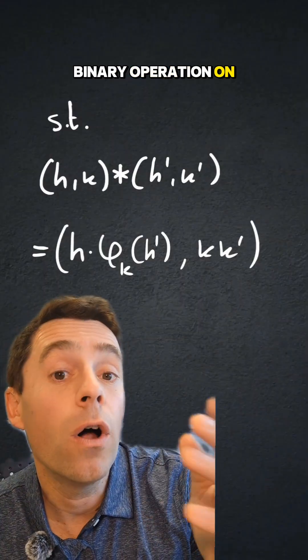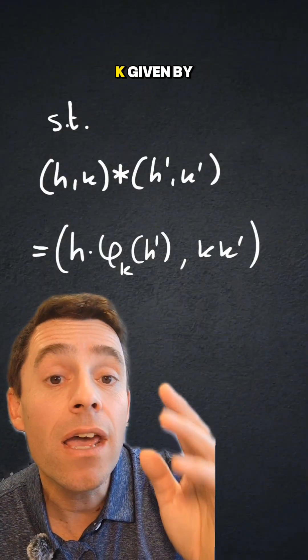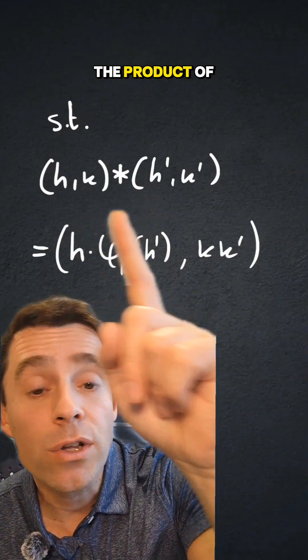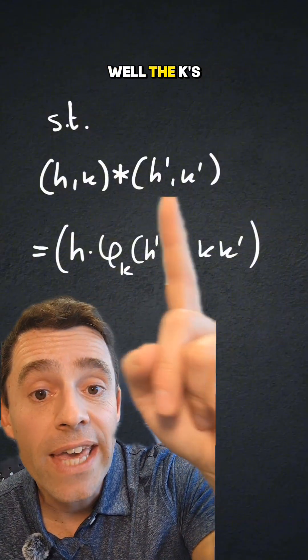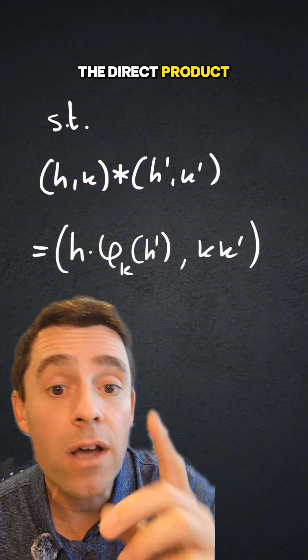So we're replacing that by just any automorphism that goes from elements of k to automorphisms of h, with the binary operation on h semi-direct product k, given by the product of two elements is, well, the k's just multiply like they do in the direct product,